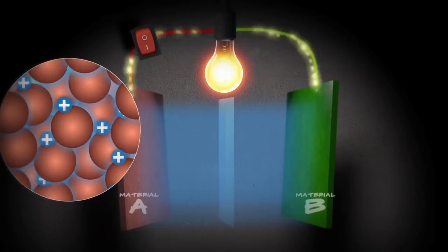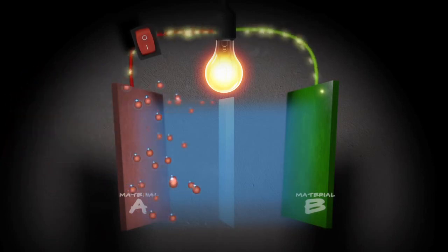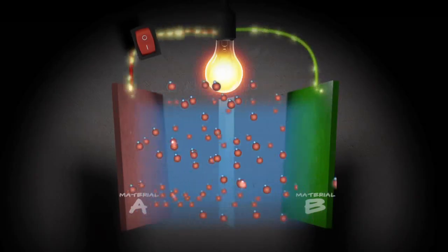As we mentioned before, ions always want to be neutral, so these guys need to find a negative charge. So they go to where the negative charges are, in material B, where all the electrons are going.